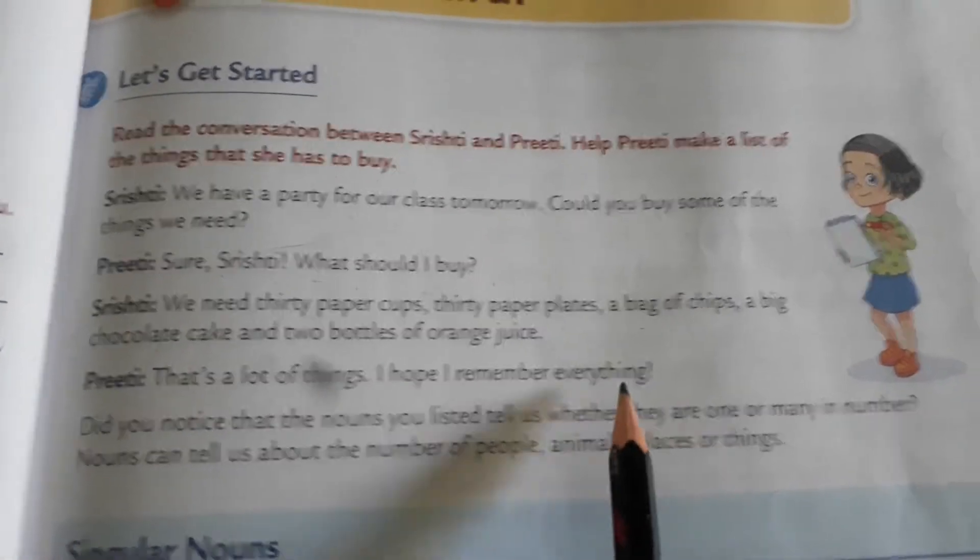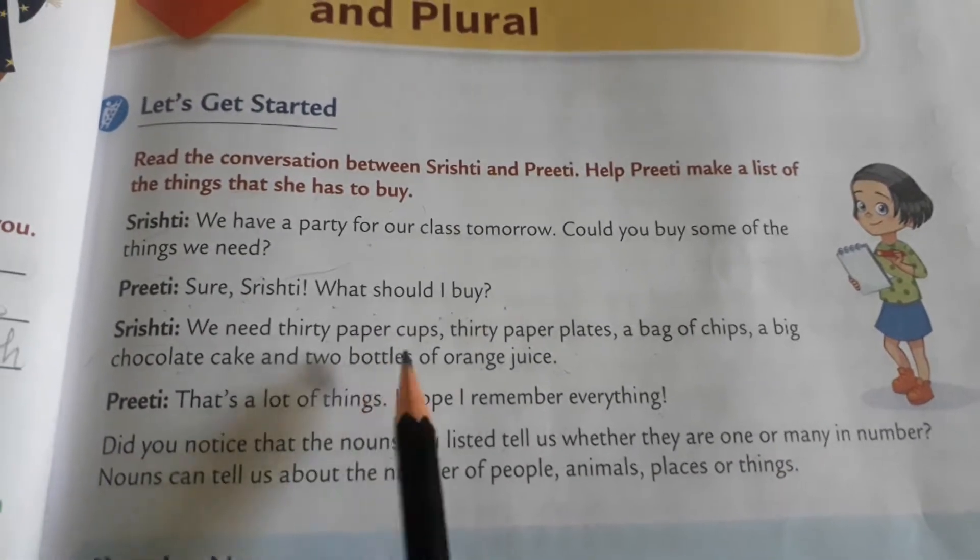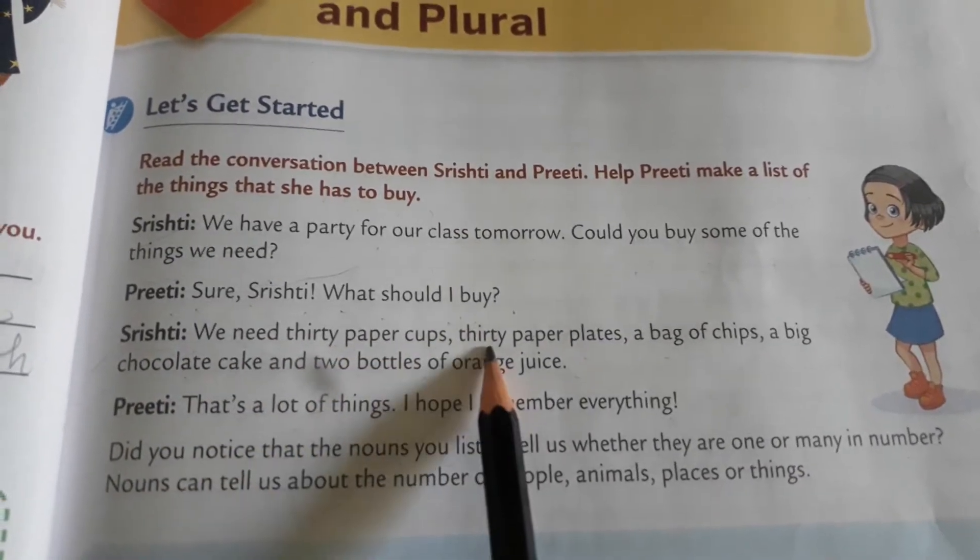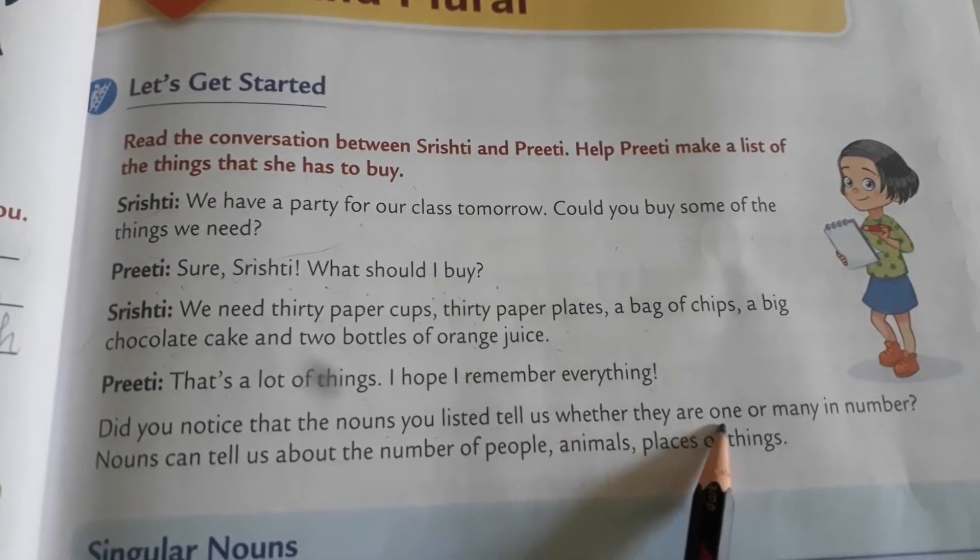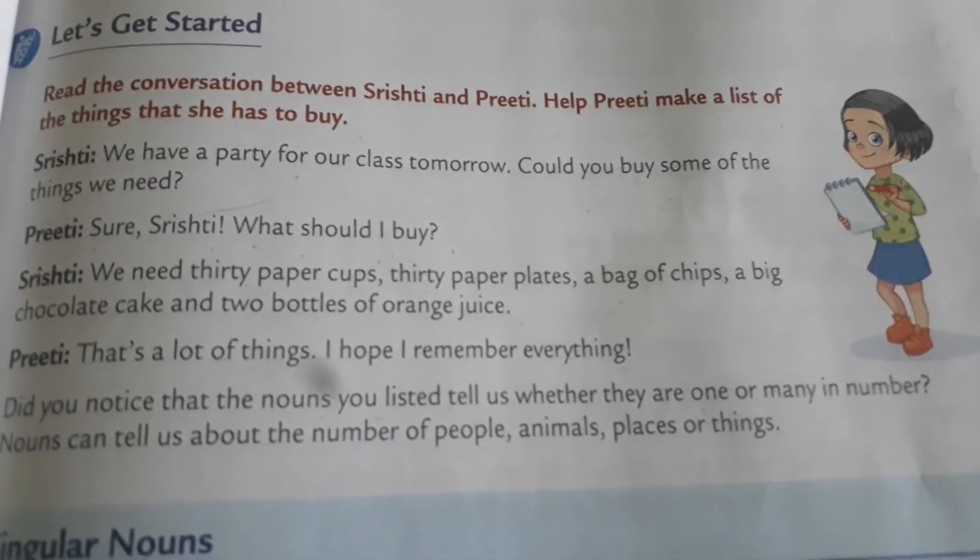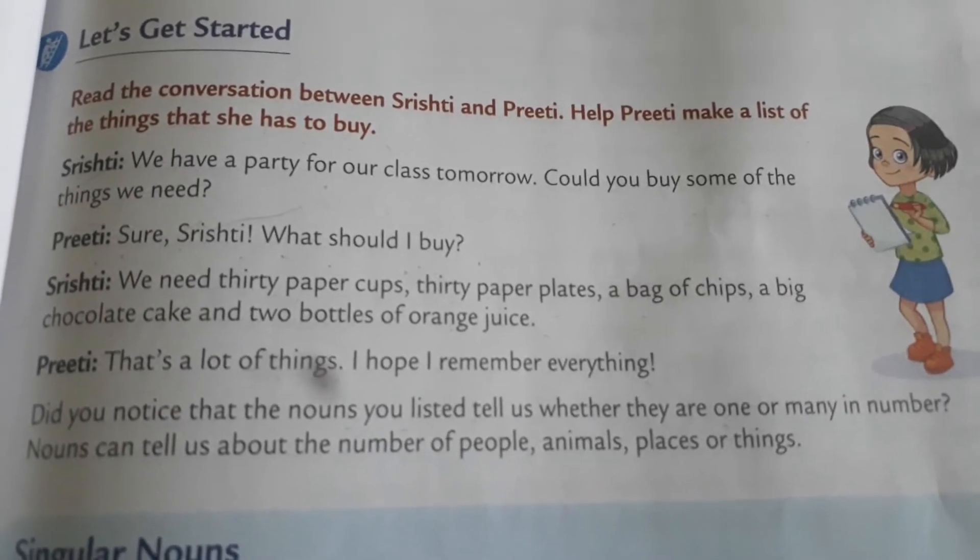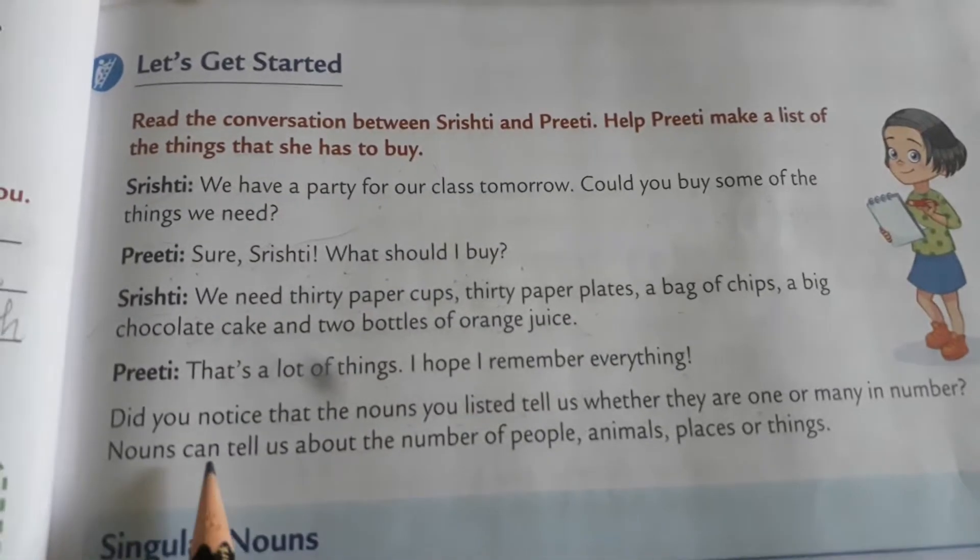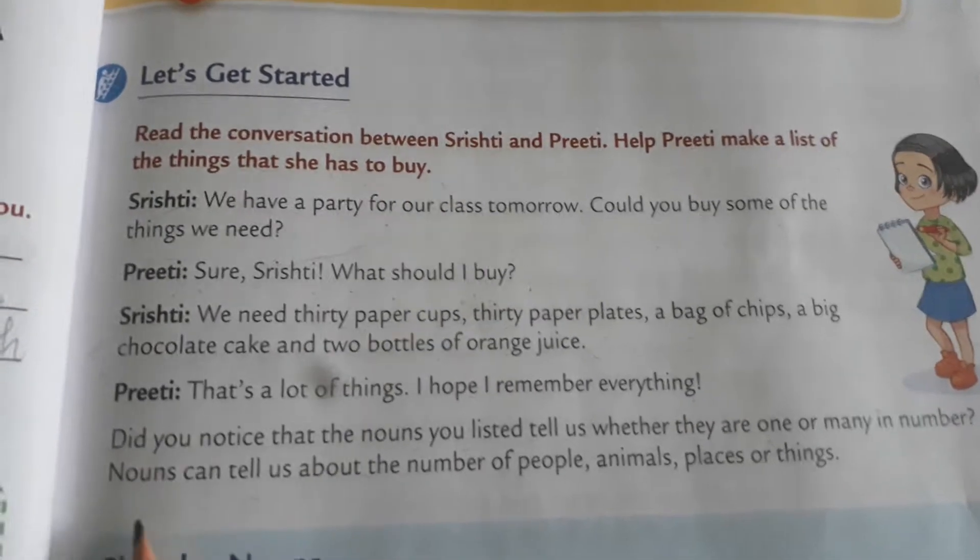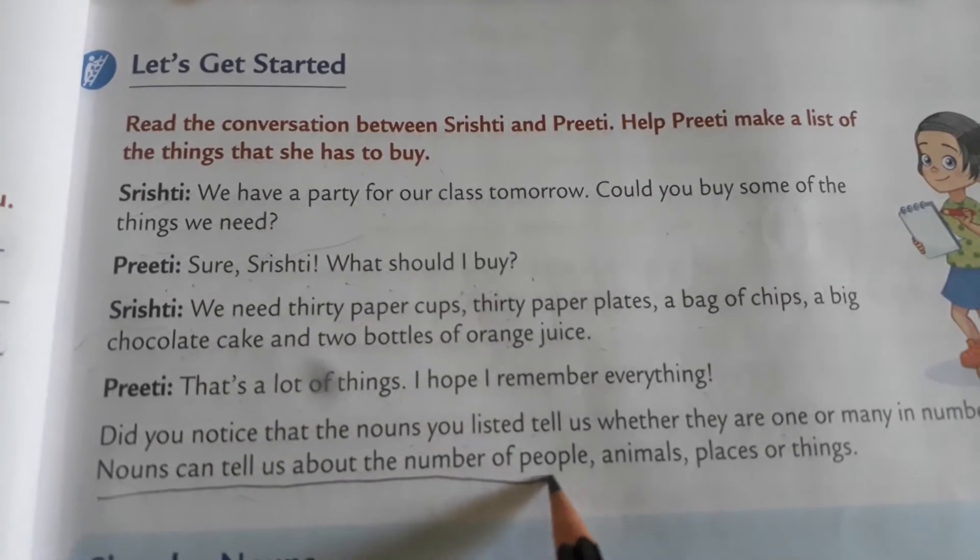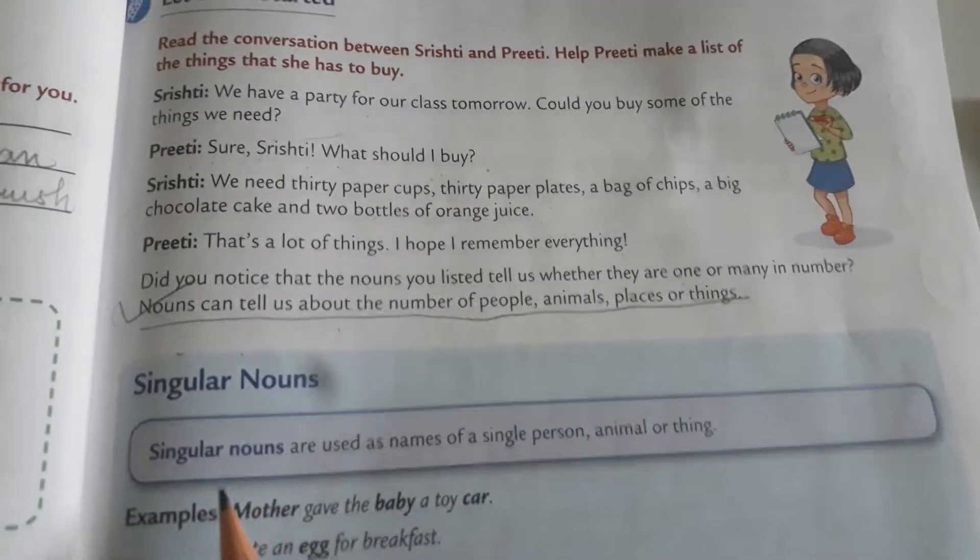Did you notice that the nouns you listed tell us whether they are one or many in number? In this line where Srishti is speaking about the name of the things, some items are in plural form and some are in singular number. Nouns can tell us about the number of people, animals, places or things. This is something new which you got to know today.